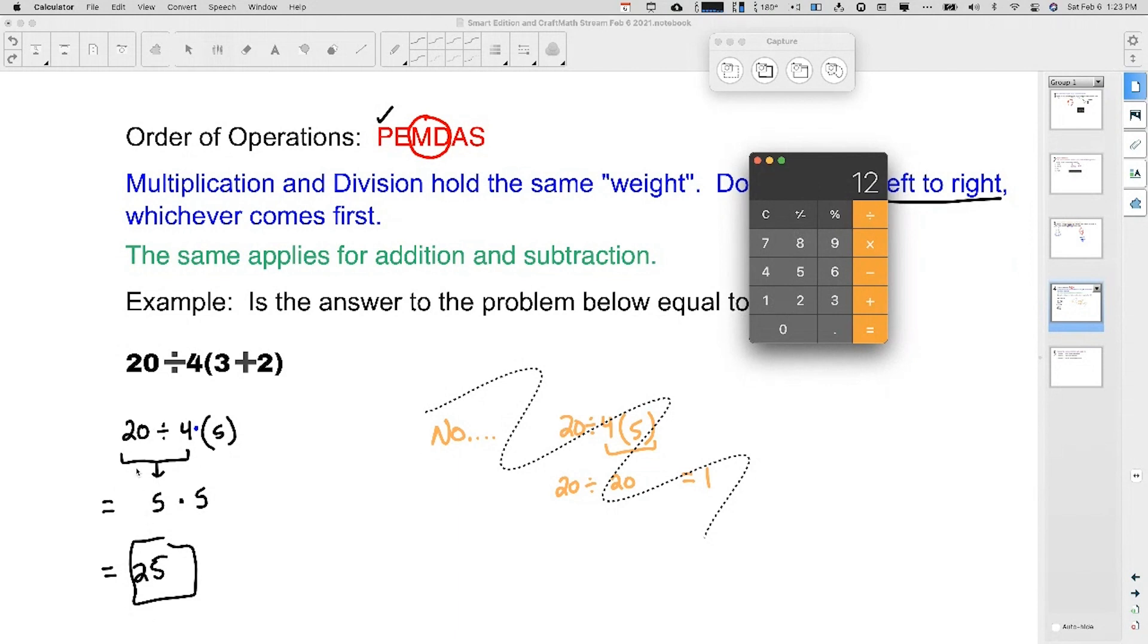Or heck, if you just go type this in at Google, type in 20 divide four parentheses three plus two, it's going to probably spit out what it should, it better. It should spit out 25.